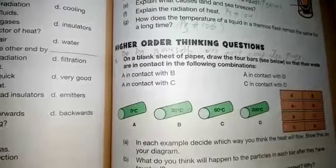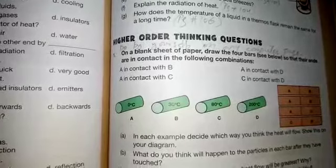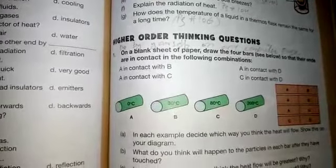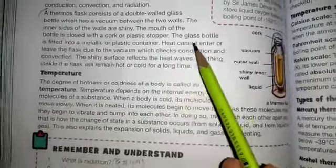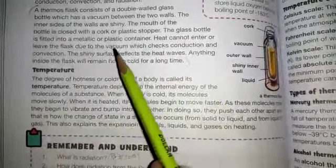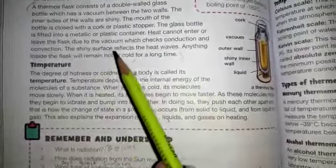Number G is: how does the temperature of a liquid in a thermos flask remain the same for a long time? Answer is on page number 106. Heat cannot enter or leak the flask due to the vacuum which checks conduction and convection. The shiny surface reflects the heat waves.